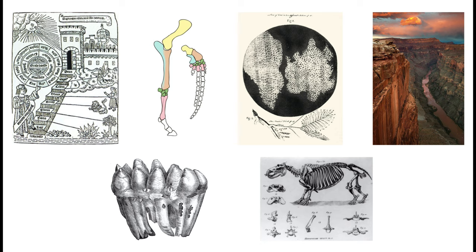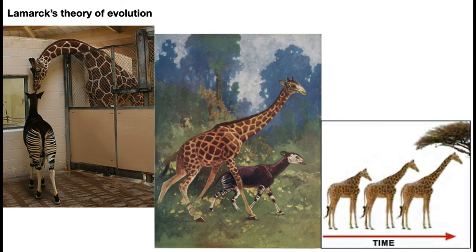Now we have a whole lot of new facts begging for some kind of explanation. One of the earlier explanations for how evolution could take place was by a French biologist named Jean-Baptiste de Lamarck. Lamarck had two main aspects to his theory about how things changed over time. The first is called the Law of Use and Disuse.